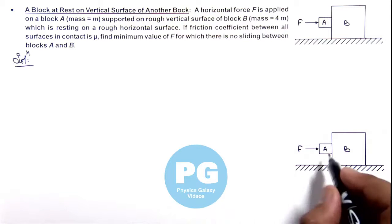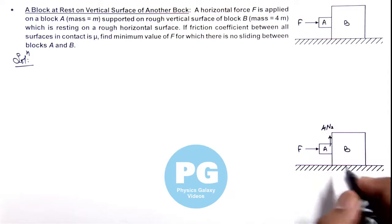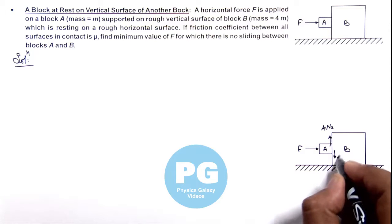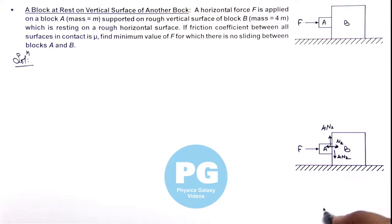Where we can see block A will have a tendency to go down due to its weight. But here the friction is the force which is μN₂ in limiting condition, which will balance its weight. So this μN₂ will act on block B in opposite direction, where N₂ is the normal reaction between blocks A and B.